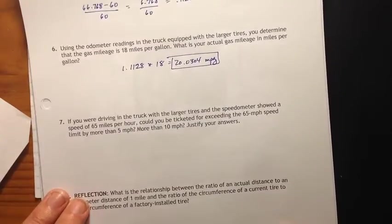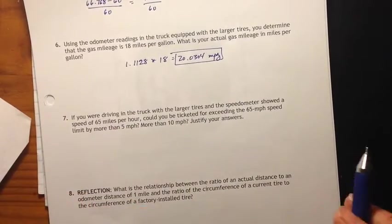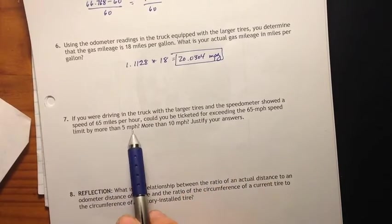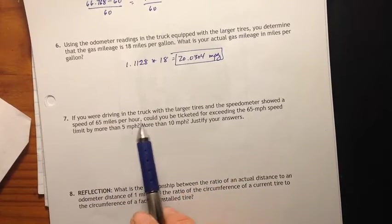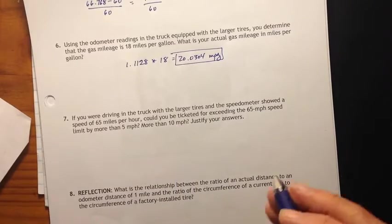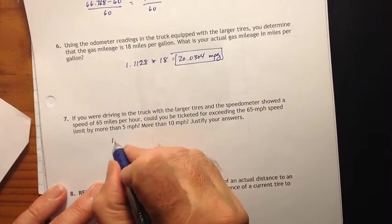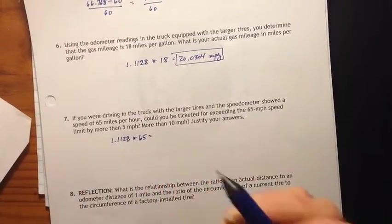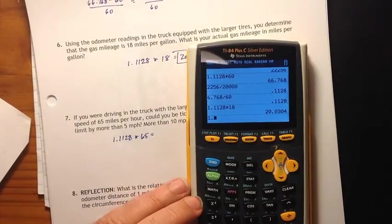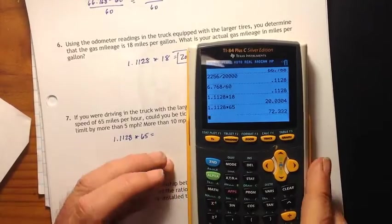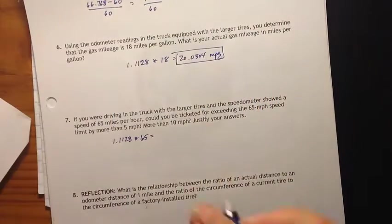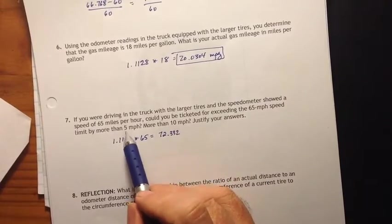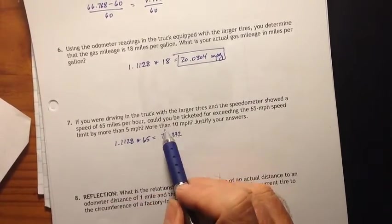Number seven, if you were driving in the truck with the larger tires, the speedometer showed a speed of 65 miles per hour. Could you be ticketed for exceeding the 65 mile per hour speed limit by more than 5 miles per hour or by more than 10 miles per hour? Justify your answers. All right. Well, let's see how fast we're actually going. 1.1128 times 65. 1.1128 times 65 gives us 72.332. So we are going more than 5 miles per hour over 65. We're going about 7 point something, but less than 10.